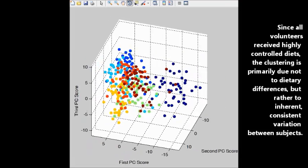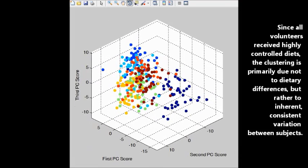For example, a principal component representation shows the clear grouping of data from different individuals.